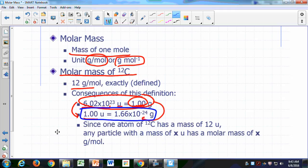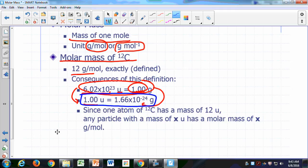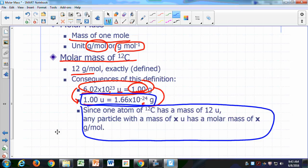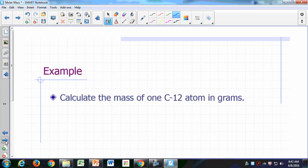So, a consequence of this is as follows. This is the most important consequence of this definition, practical consequence. Since one atom of carbon-12 has a mass of exactly 12 units, and a mole of carbon-12 has a mass of exactly 12 grams per mole, then any particle that has a mass of x atomic mass unit will have a molar mass of x grams per mole. In other words, the number that you see in the periodic table as the atomic weight, that's the mass of one mole of a naturally occurring sample of your atom.